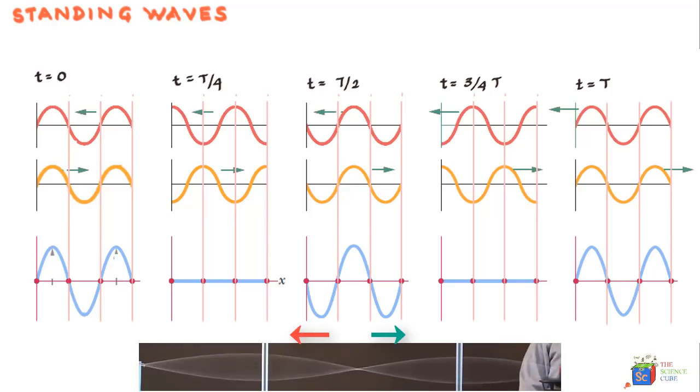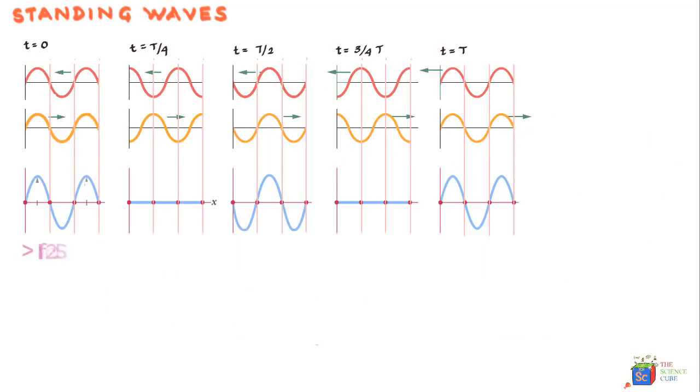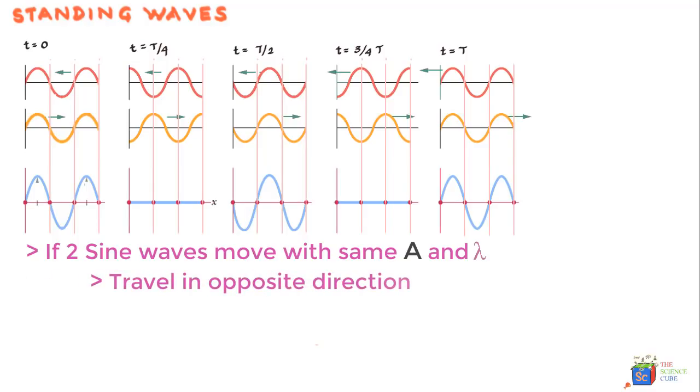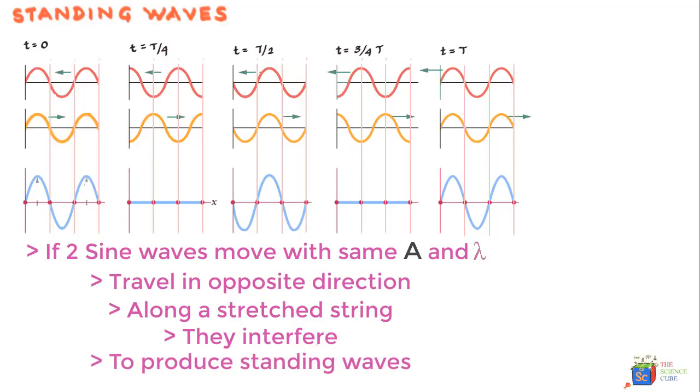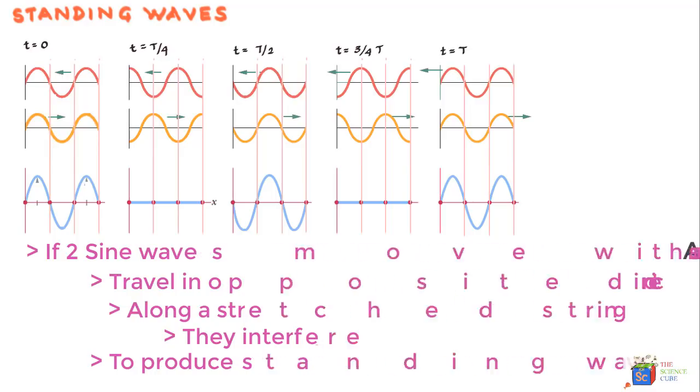Well, we say that these are standing waves because the wave pattern does not move to left or right. So what we can say in a summary statement is that if two sinusoidal waves having the same amplitude and wavelength travel in opposite directions along a straight string, they can interfere to produce a standing wave, which does not move like a traveling wave.